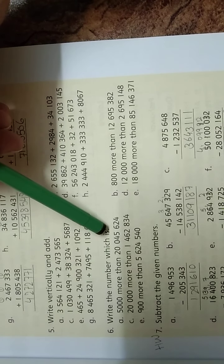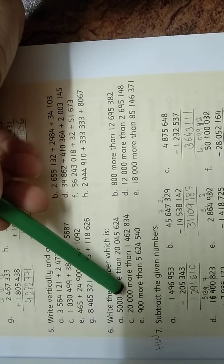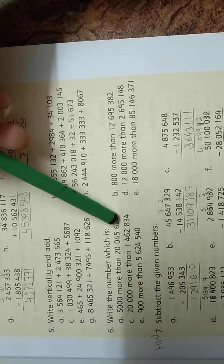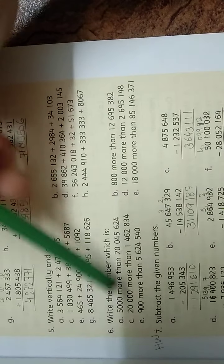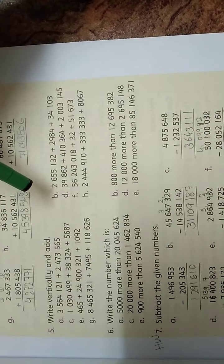Write the number which is 5,000 more than this number. More than means addition, so we have to add 5,000 to this number.